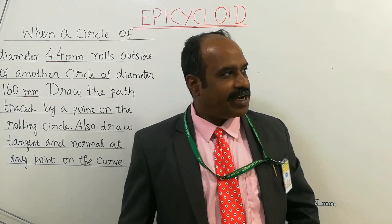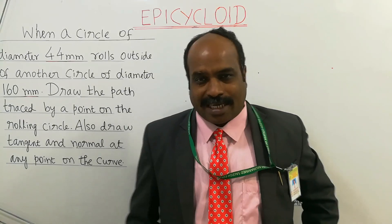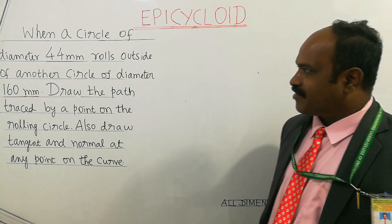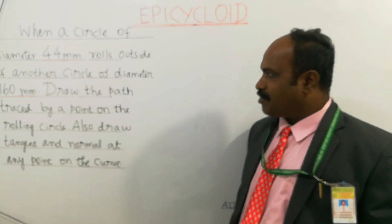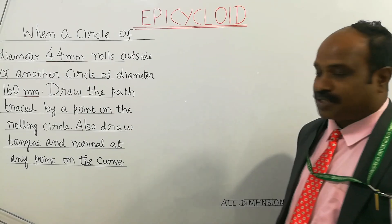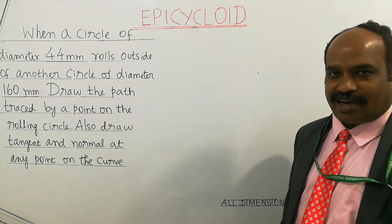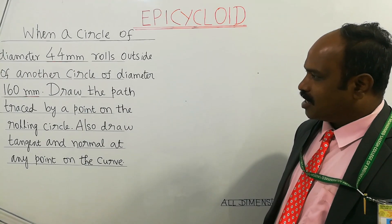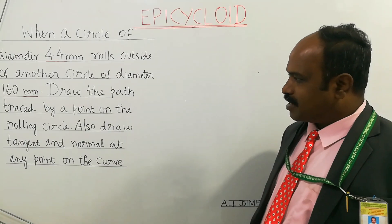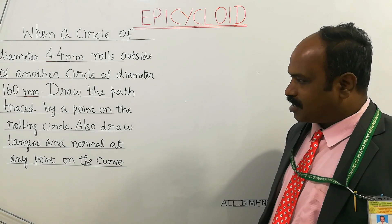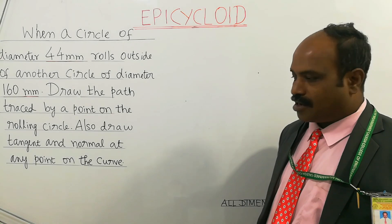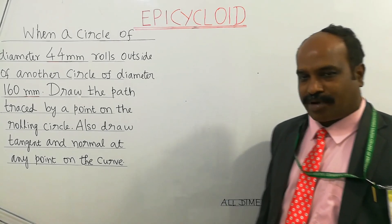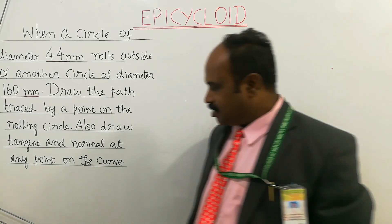The topic is epicycloid. Consider a question: when a circle of diameter 44 mm rolls outside of another circle of 160 mm, draw the path traced by a point on the rolling circle. Also draw the tangent and normal at any point on the curve.